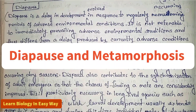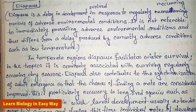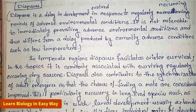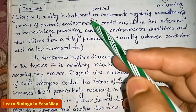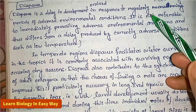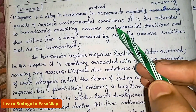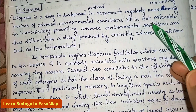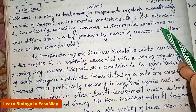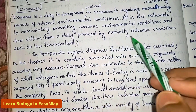Hello everyone, welcome back to my channel, Learn Biology in Easy Way. In this video I am going to discuss about diapause and metamorphosis. Diapause is a delay in development evolved in response to regularly recurring periods of adverse environmental conditions. It is not referable to immediately prevailing adverse environmental conditions, and thus differs from a delay produced by current adverse conditions such as low temperature.